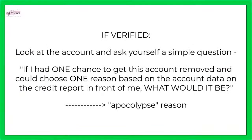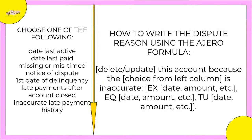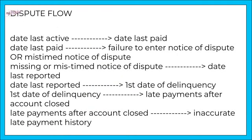If the account is verified, look at the account and ask yourself a simple question: if I had one chance to get this account removed and could choose one reason based on the actual account on the credit report in front of me, what would it be? We call this the apocalypse reason. You're going to choose one reason and insert it into the dispute reason formula: 'delete or update this account because [choice] — such as the date last active — is inaccurate,' then state what it shows on Experian, Equifax, and TransUnion. Your dispute flow is one thing to the next: date last active, then date last paid, then possibly failure to enter notice of dispute or mistimed notice of dispute.